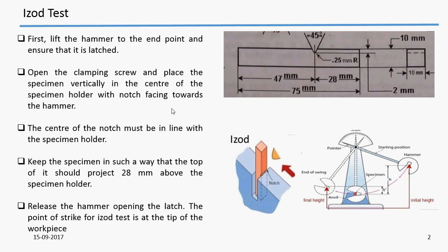It is to be ensured that the center of the notch must be in line with the specimen holder. Keep the specimen in such a way that the top of it should project 28 mm above the specimen holder.